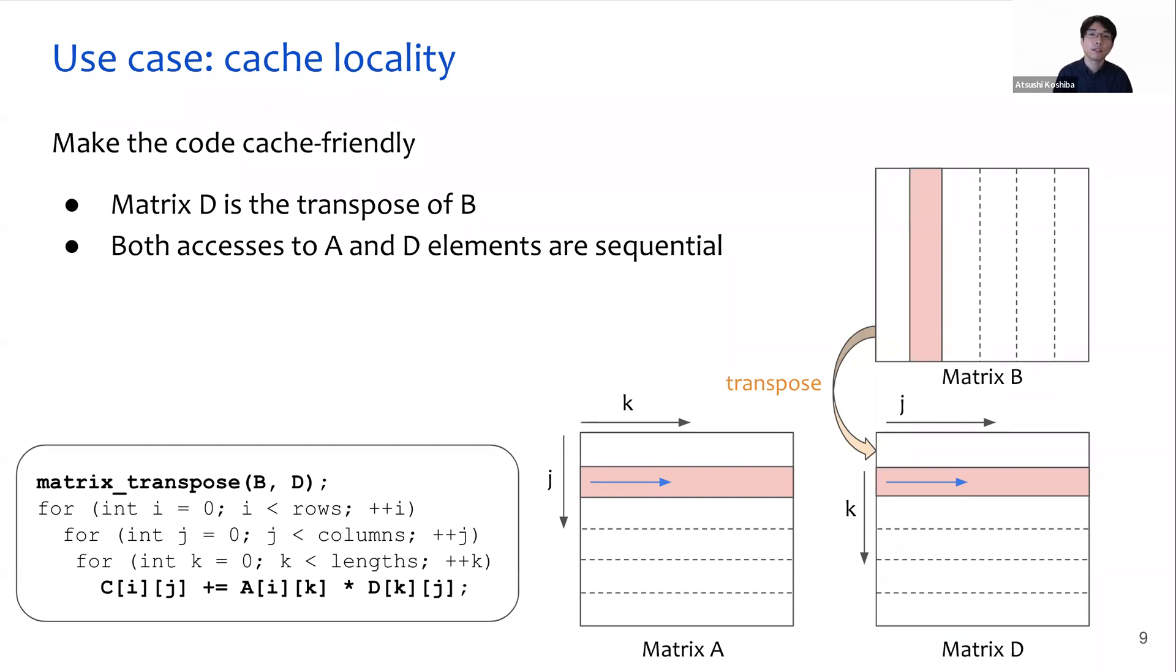There are several solutions to avoid this inefficient use of the cache. I'd like to introduce one solution using matrix transposition. This slide shows another example of matrix multiplication using matrix transposition. In this code, matrix D is newly produced by transposing matrix B before starting the multiplication. In the code, instead of matrix B, the elements of D are multiplied by elements of A. In this case, code accesses to matrix A and D are getting sequential. It leads to less cache miss rates than the previous example and achieves better performance.